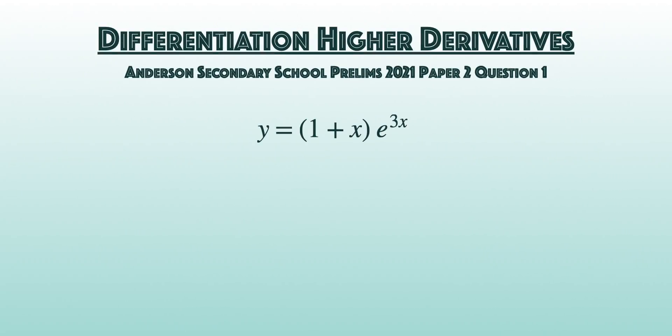Given that y equals 1 plus x times e to the power of 3x, the second derivative of y, subtract away 6 times the first derivative of y, and adding ky equal to 0, find the value of the constant k.